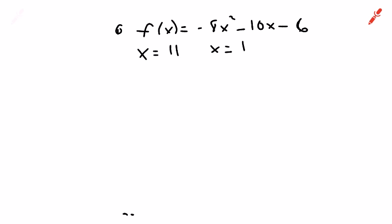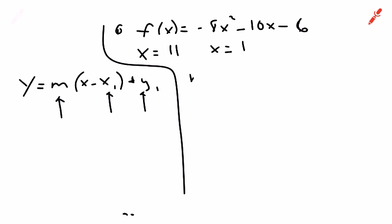In order to write an equation of any line, we're always going to use this equation: y equals m times the quantity x minus x1, plus y1. We need to know m, x1, and y1. We already know the x values — 11 and 1 — but we don't know the rest. So let's get the slope first using the formula m equals y2 minus y1 over x2 minus x1.